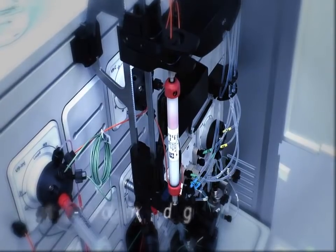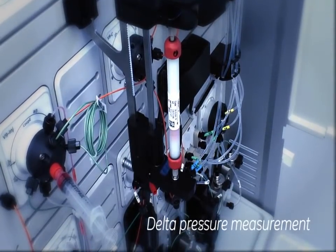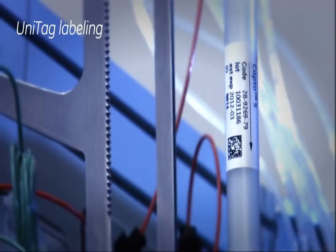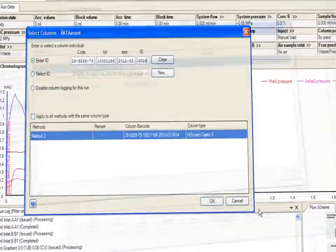Multiple pressure sensors allow continuous measurement of pressure over the column. Unitag labeling of columns provides traceability and easy accessible run history.